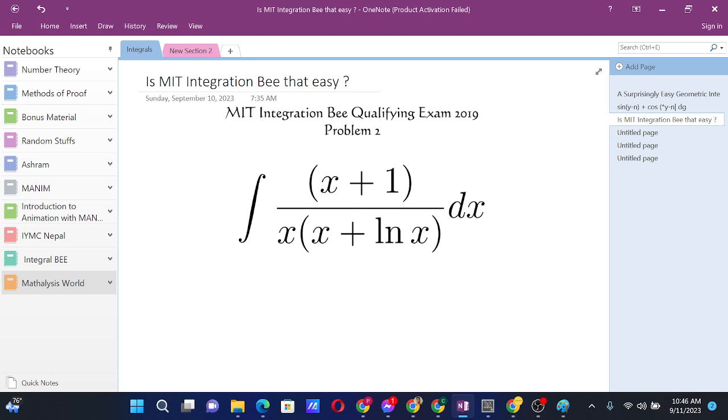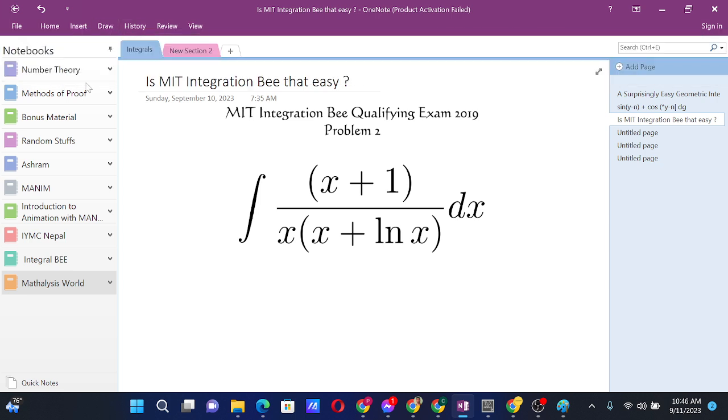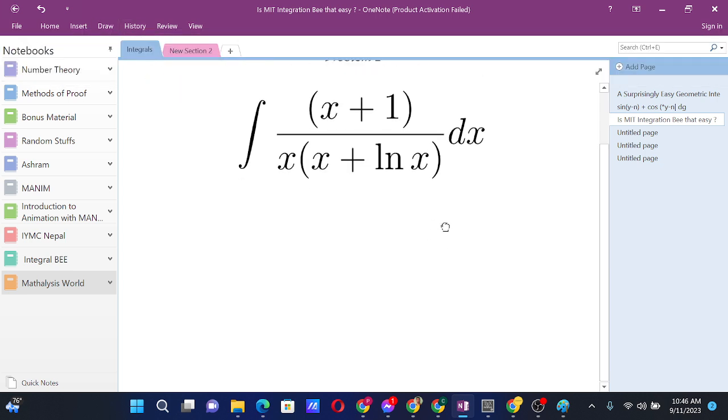Is MIT integration that easy? We have this integral: (x+1) over x times (x + ln x). This was asked in MIT Integration Bee qualifying exam 2019, problem 2. This integral is really easy, I should say.